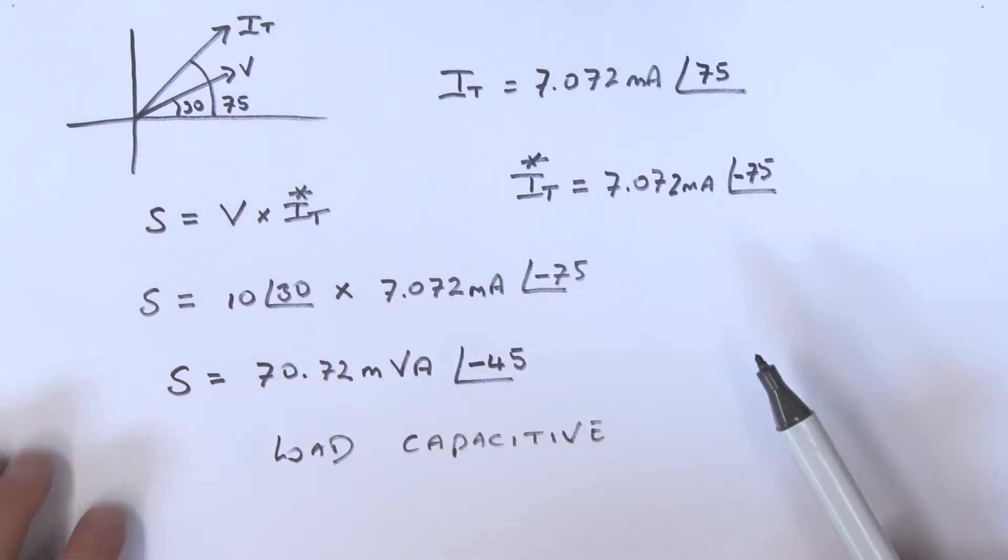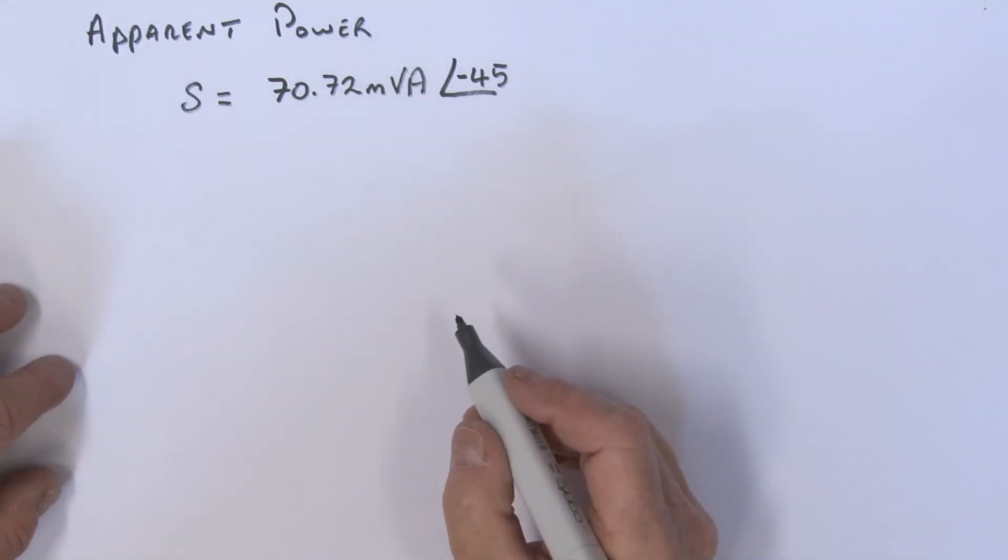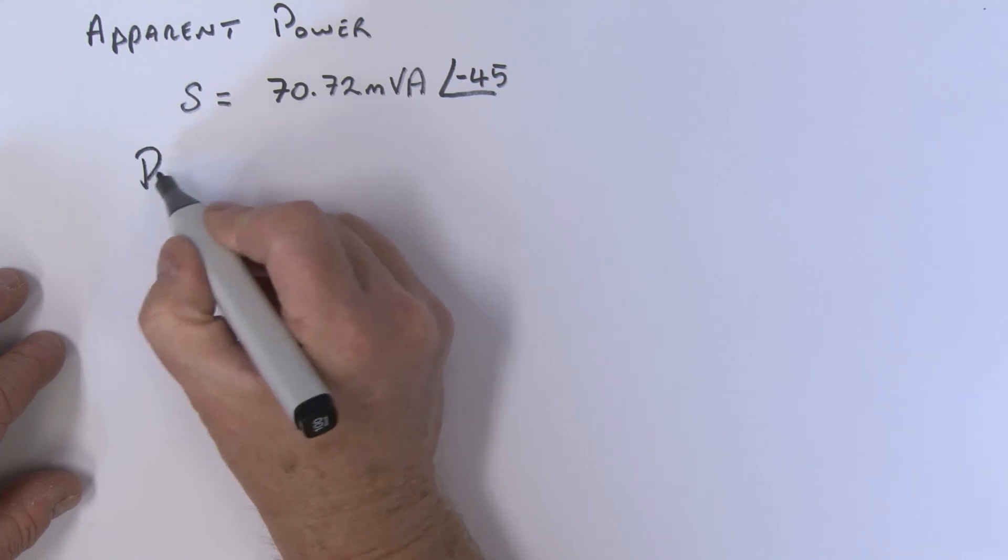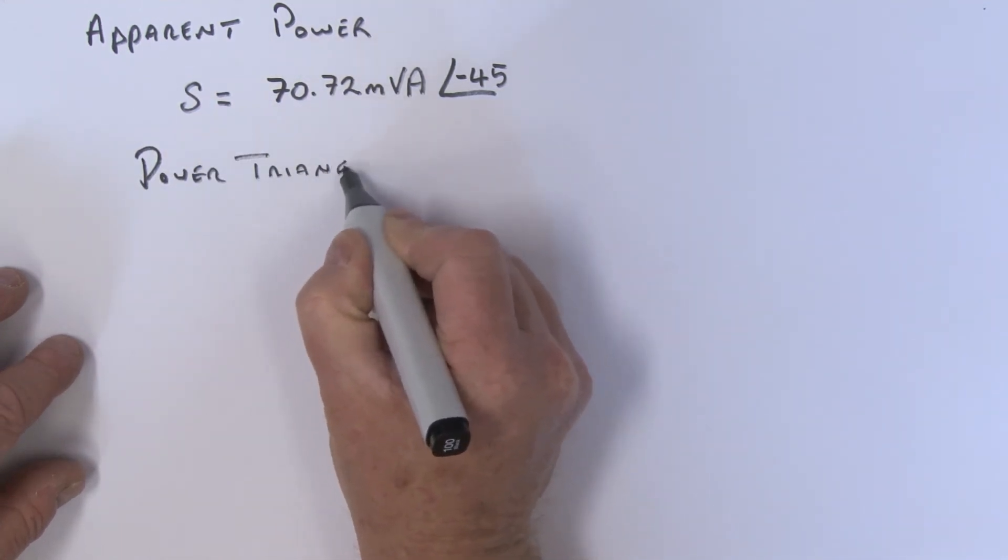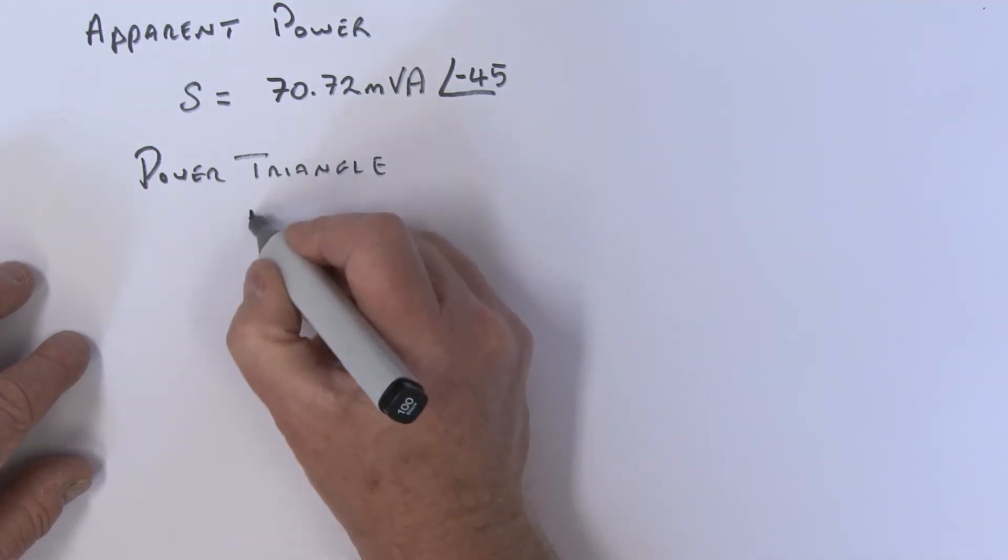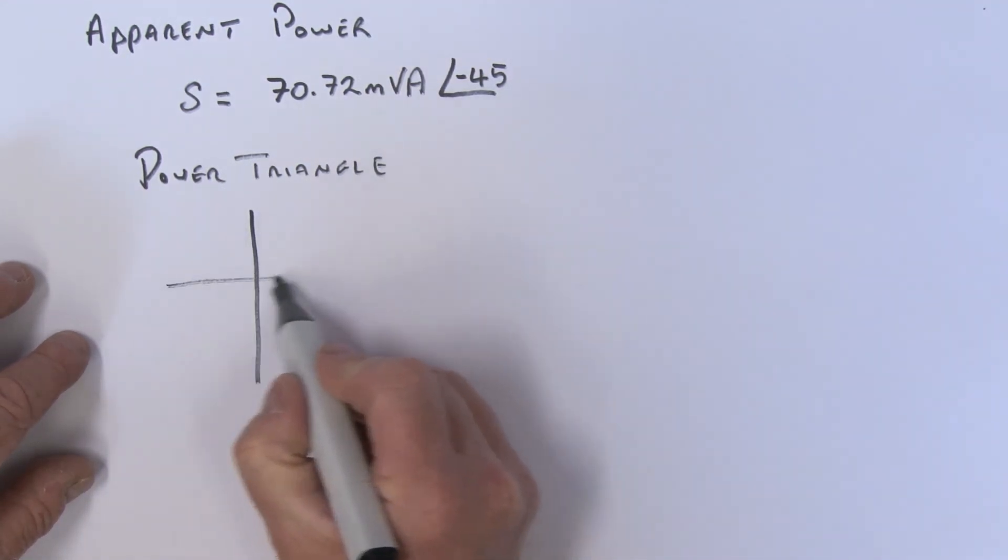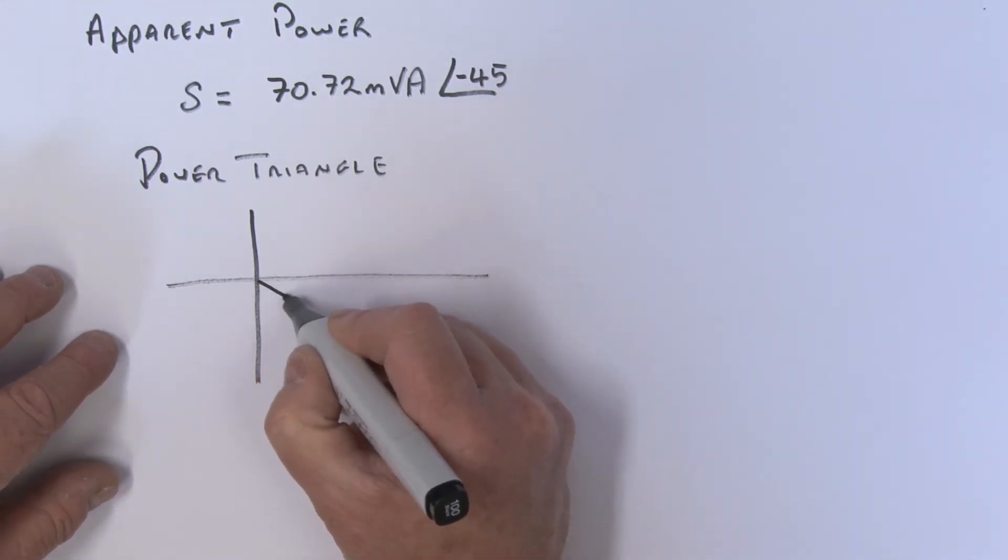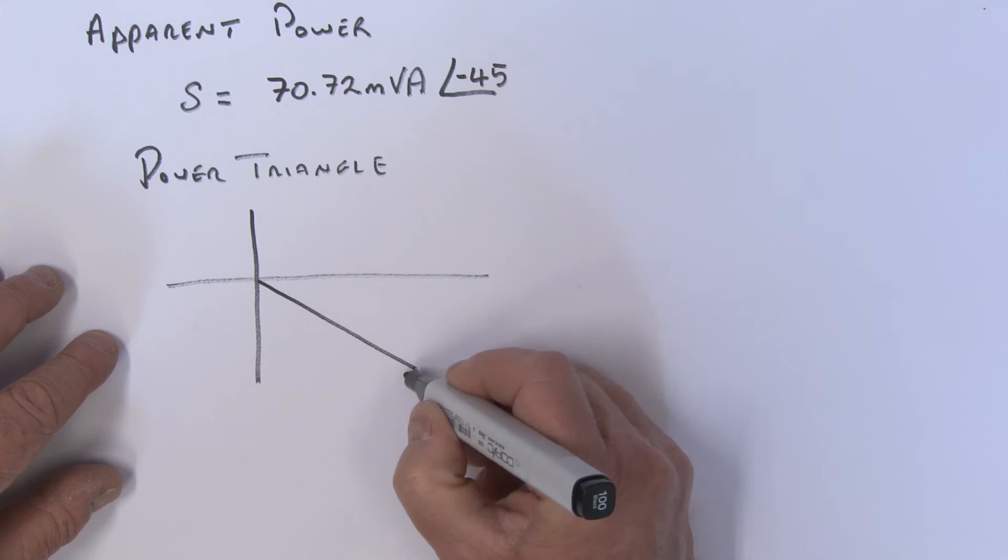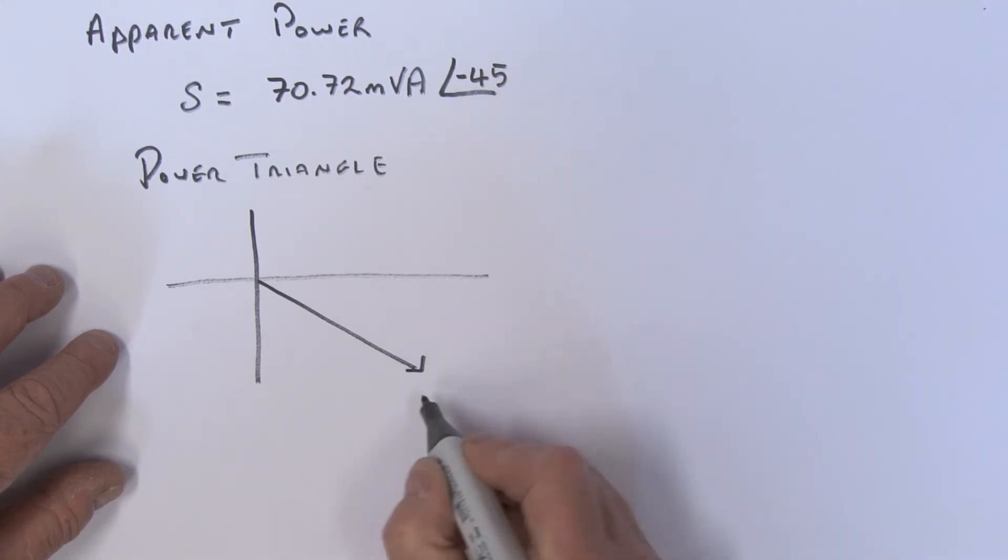So when the current in the circuit IT leads the voltage V, the voltage of the power source V, we say we've got a leading power factor. But we're going to come back to that a little later on and we'll formalize that. So now let's draw our power triangle. Okay, what do we have?